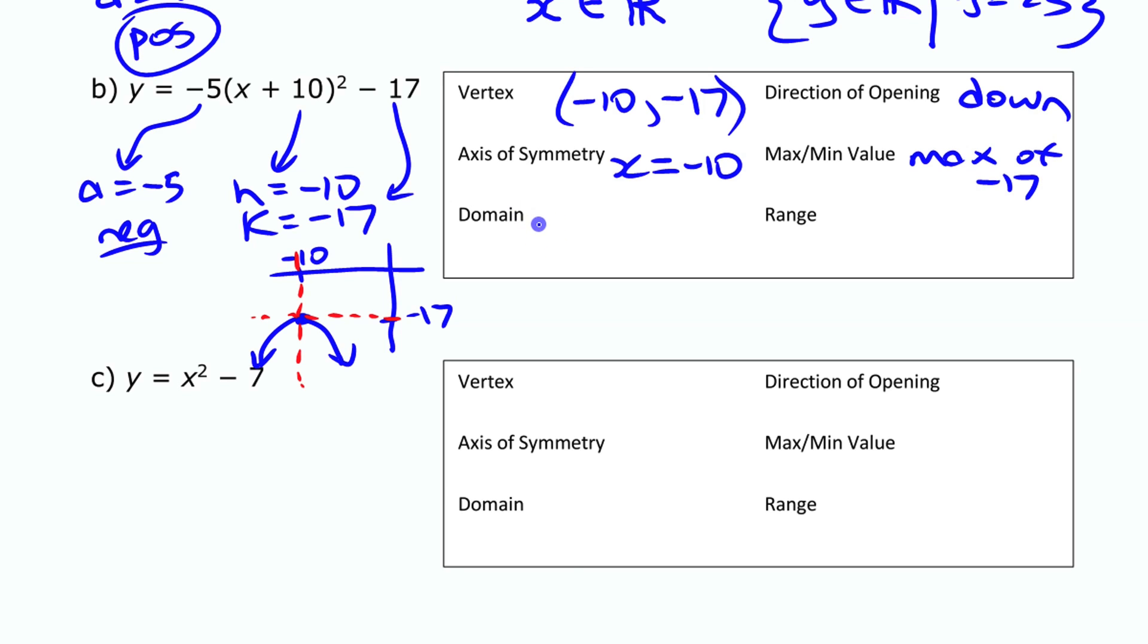The domain again, for the same reasons as above is all real numbers. There are no restrictions. And the range is since this one has a maximum of negative 17, another way of saying that is all the y values have to be less than or equal to negative 17.